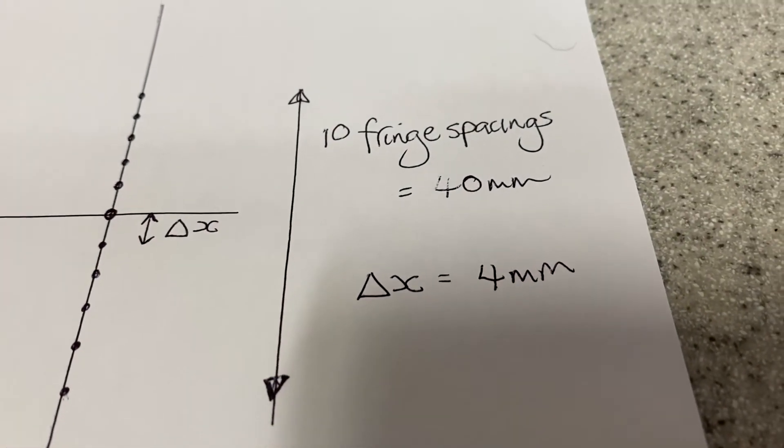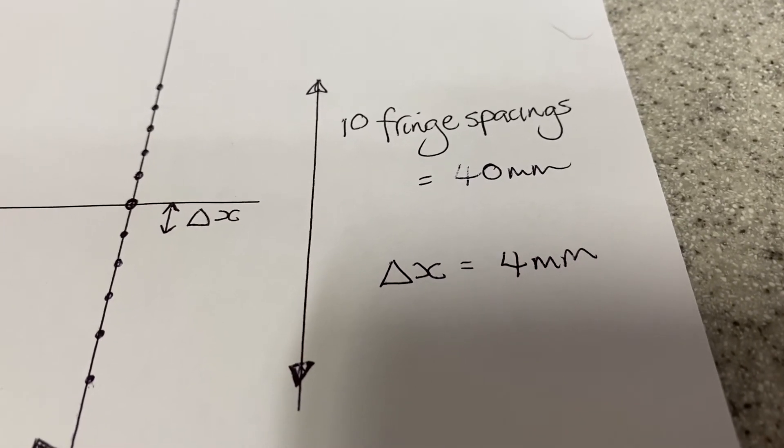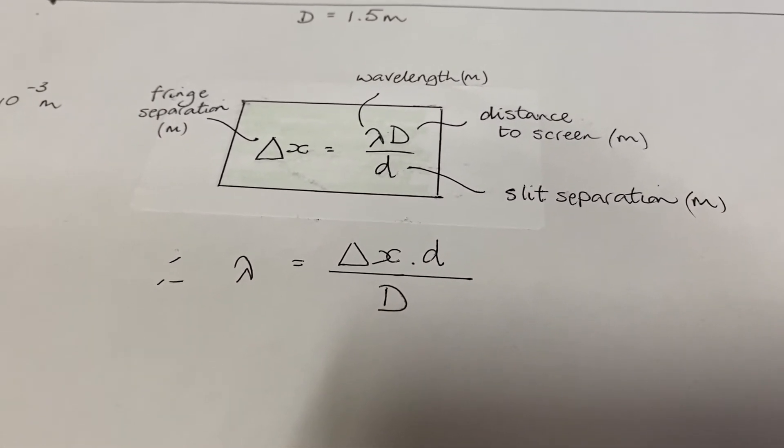10 fringe spacings is 40 millimeters. So delta X, the spacing between each fringe, is 4 millimeters. If we put all that into our relationship, let's see what we get.